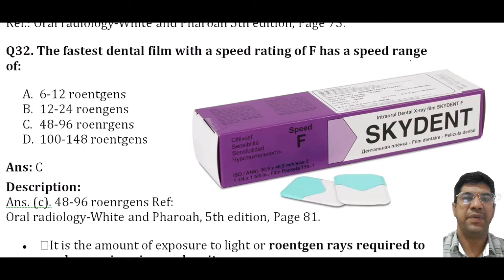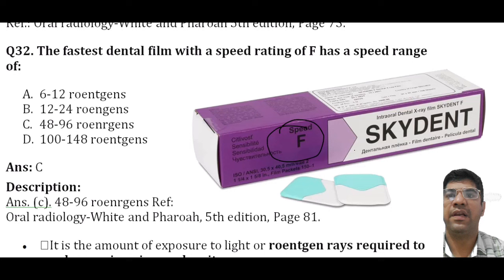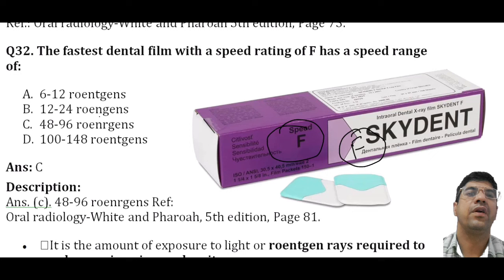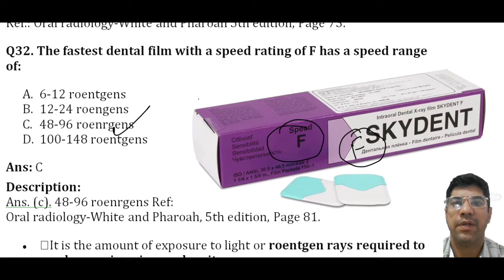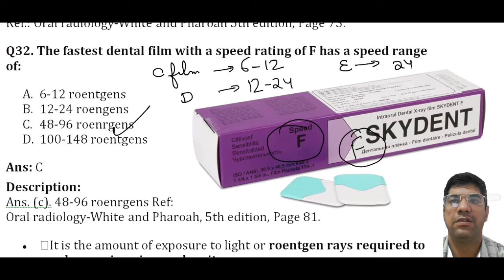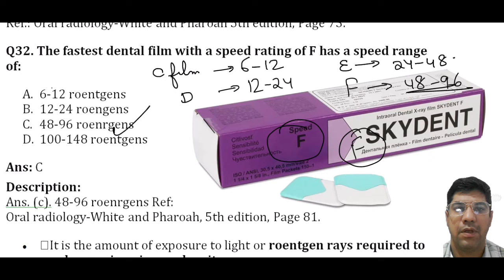The fastest dental film has a speed group of F, with a speed range of 48 to 96 round tons. For comparison, C film has a range of 6 to 12, D film 12 to 24, E speed 24 to 48, and F is the fastest at 48 to 96. The answer is C. A faster film requires less radiation to create an image, meaning the patient is exposed to a lower dose of ionizing radiation during the dental x-ray procedure.